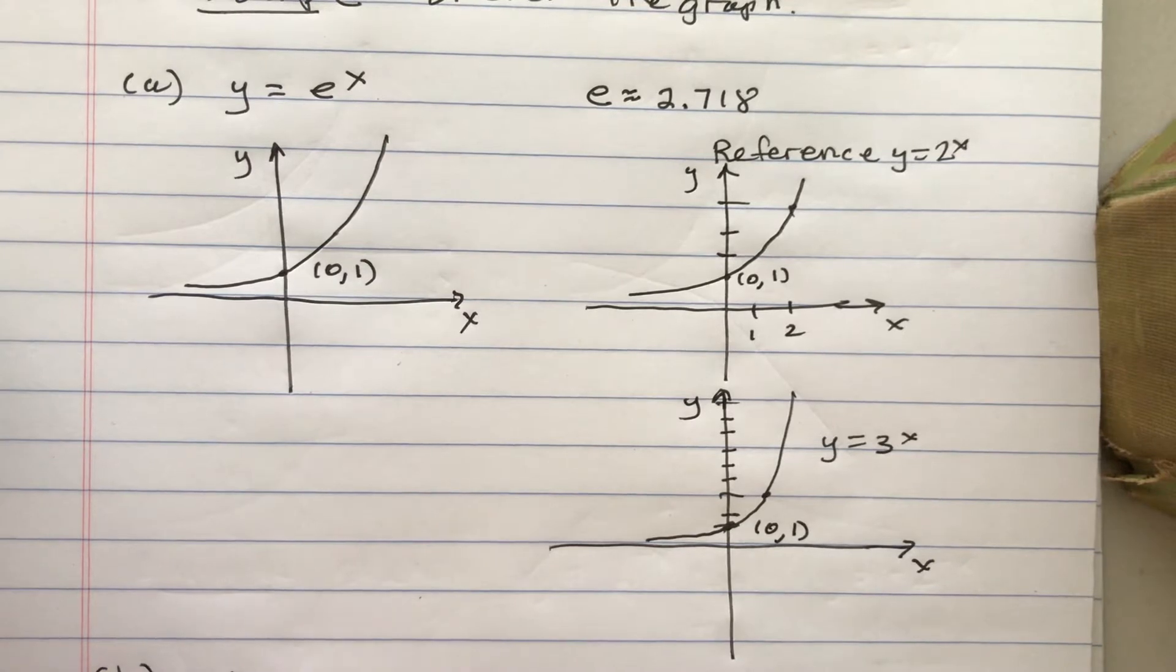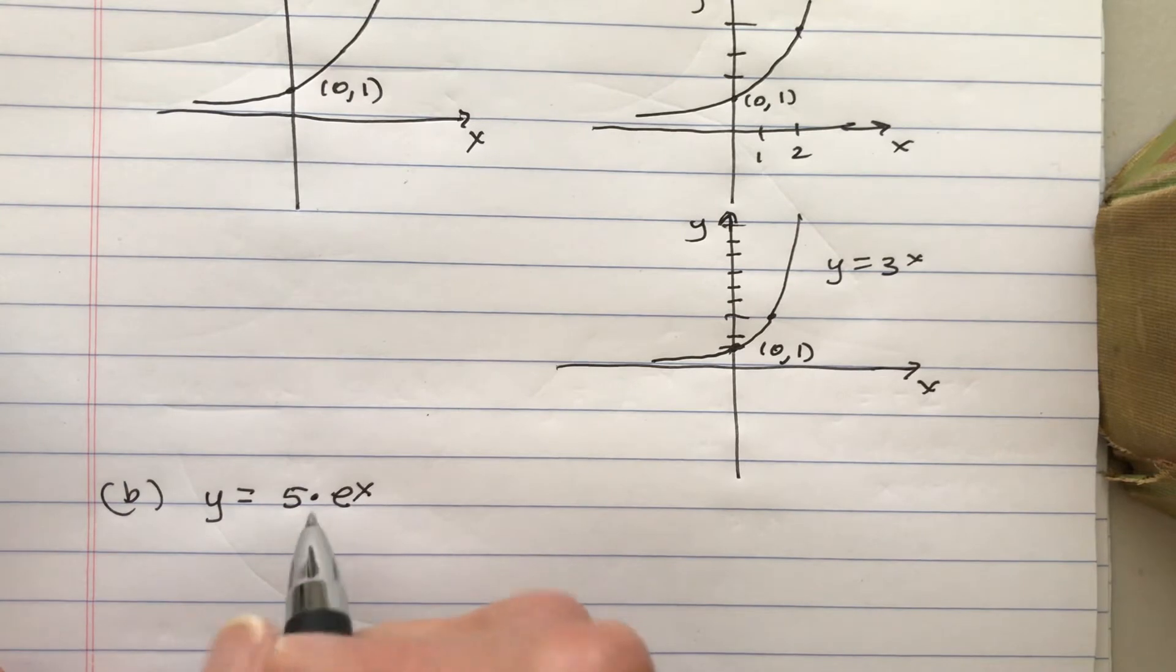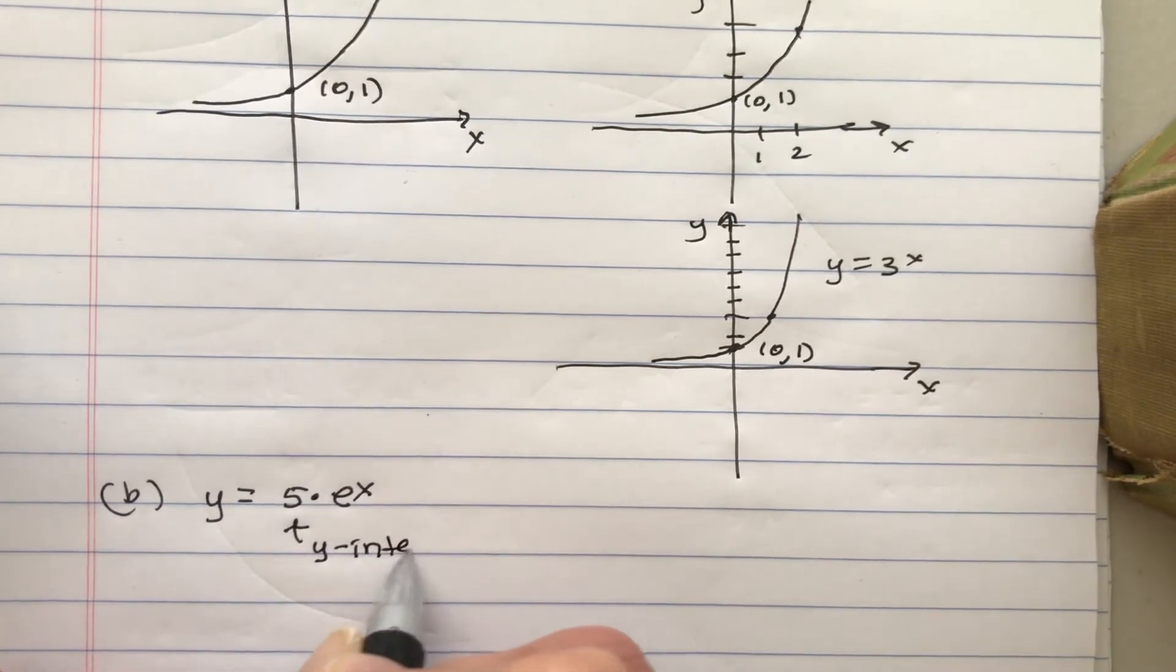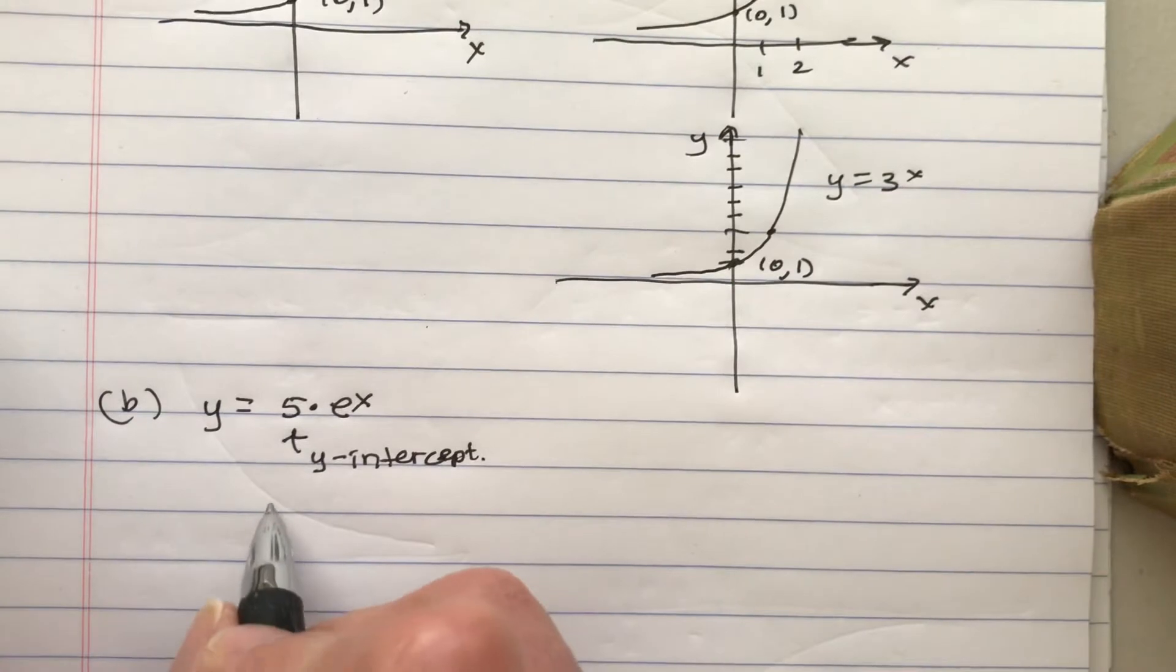Okay, now what happens if we multiply e to the x by the number 5? Well, this is going to give us the y-intercept. You could call that the initial value. When x is 0, you get 5 times e to the 0, so you get 5. So that can be thought of as the initial value of this function.